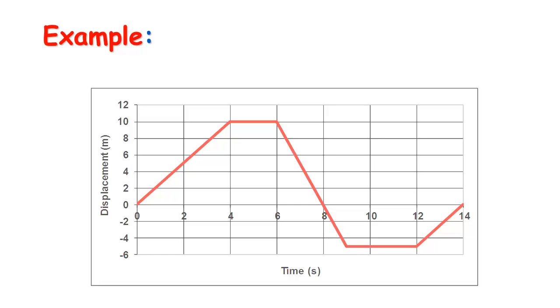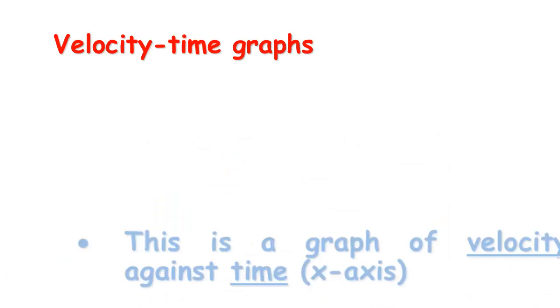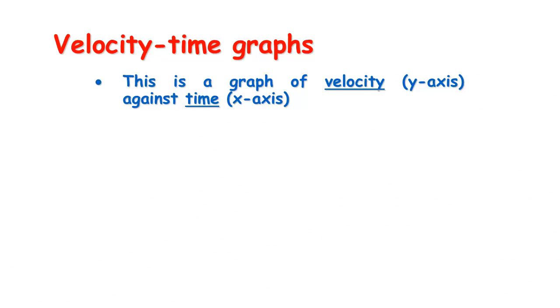The other type of graph we commonly use is a velocity-time graph, where velocity is the dependent variable on the vertical axis and time is on the horizontal axis. These graphs look really similar to position-time graphs, so you have to be very careful when answering questions. We're doing very similar calculations, but they tell us something completely different.